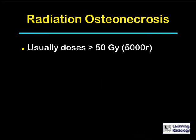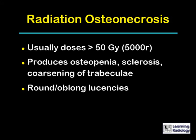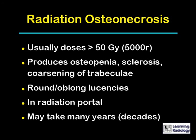Radiation osteonecrosis usually requires doses in excess of 50 gray or 5,000 rads. We may see osteopenia, osteosclerosis, or coarsening of the trabecular pattern. There may be round or oblong-shaped lucencies in the bone. A key differentiating factor between radiation-induced osteonecrosis and other diseases is that it occurs within the radiation portal, and it usually takes many years, sometimes decades, to appear.